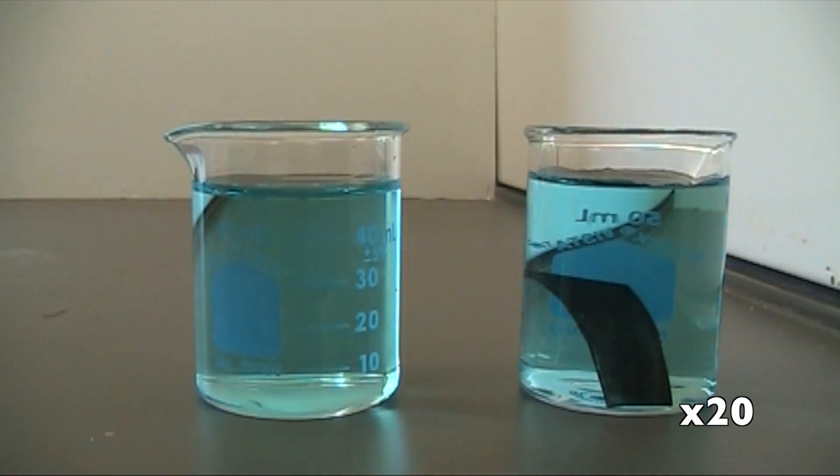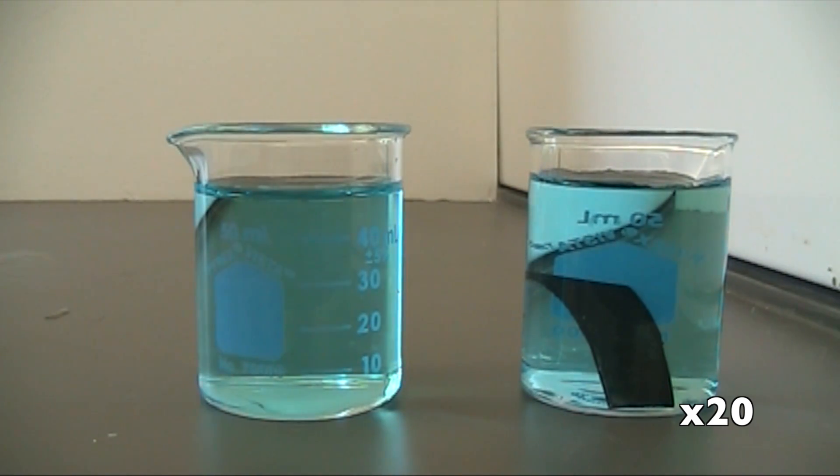For this experiment we prepared 50 milliliters of 0.1 molar copper sulfate and a strip of zinc metal. Two solutions of copper sulfate were made, one as the control, the other as the experimental, to observe any differences to the solutions after zinc was added.